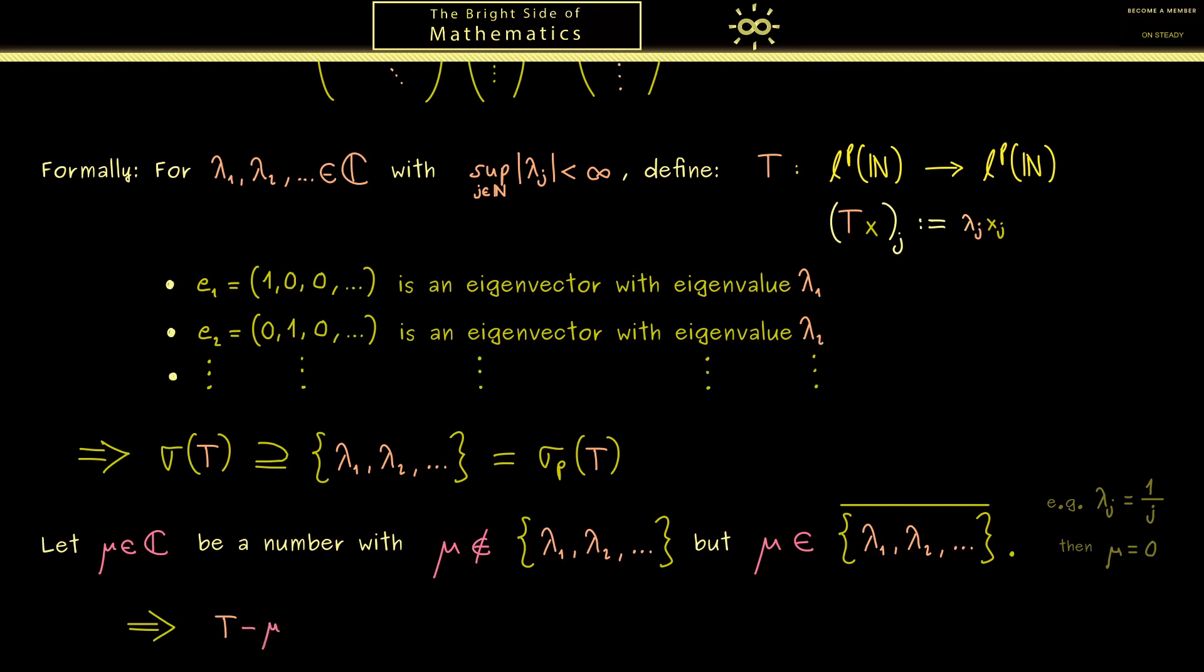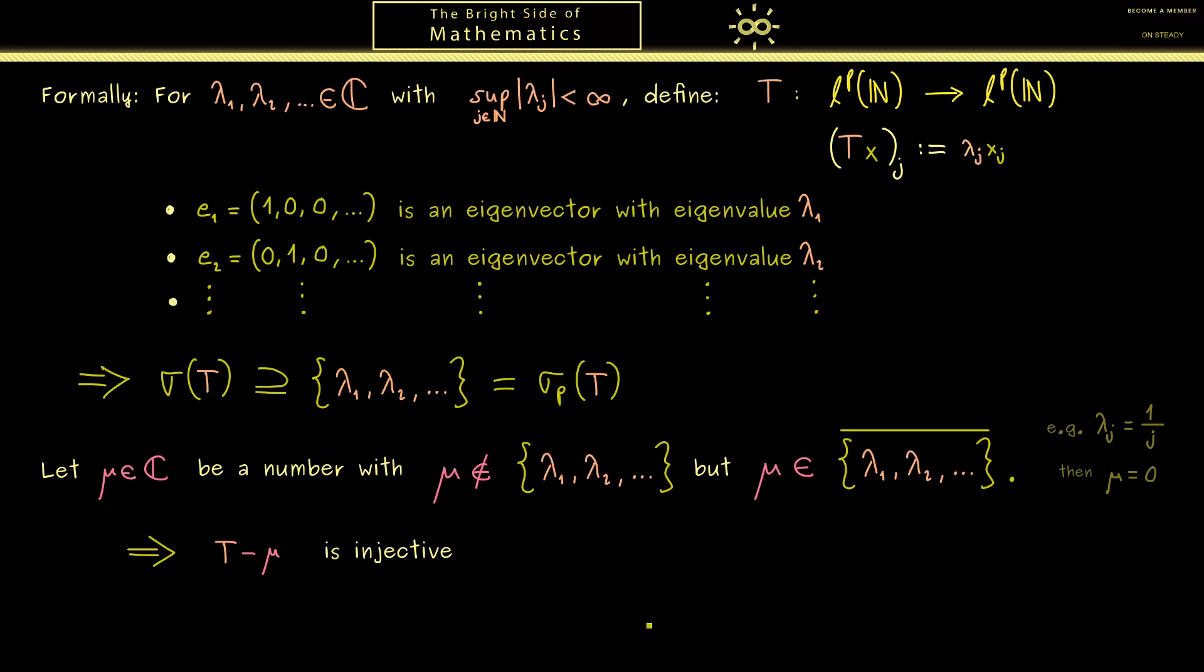T minus mu is always injective. Now at this point you might already guess, in the next step we want to show that this operator is not surjective. Now with this result we know that mu is in the spectrum of T as well.